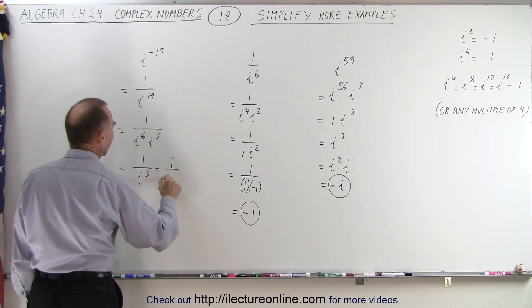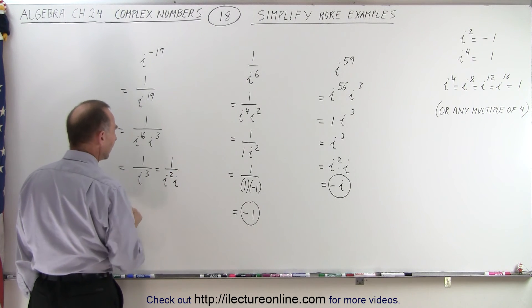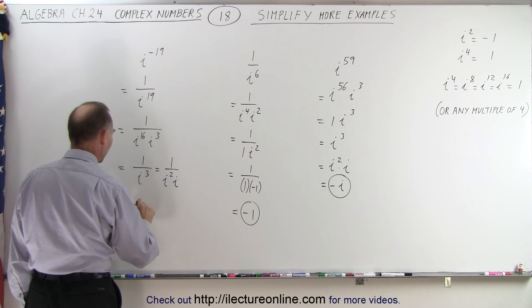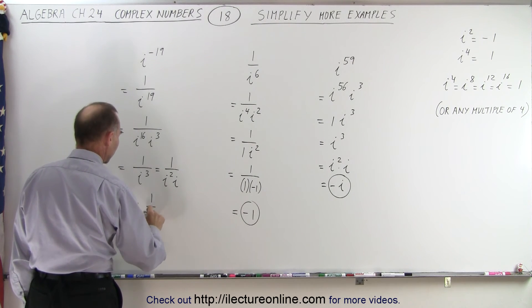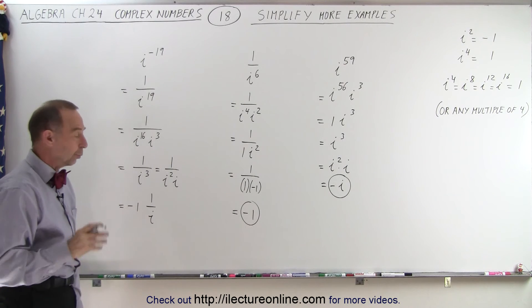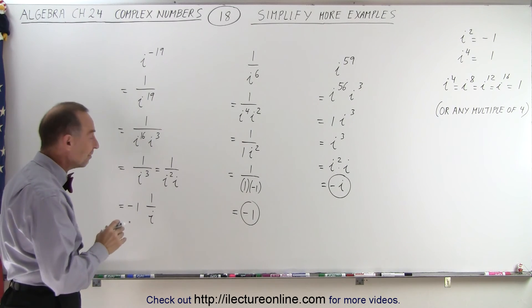Of course, this can be written as 1 over i squared times i. And i squared is equal to negative 1. So this is equal to negative 1 times 1 over i. And then we learn that 1 over i is the same as negative i.